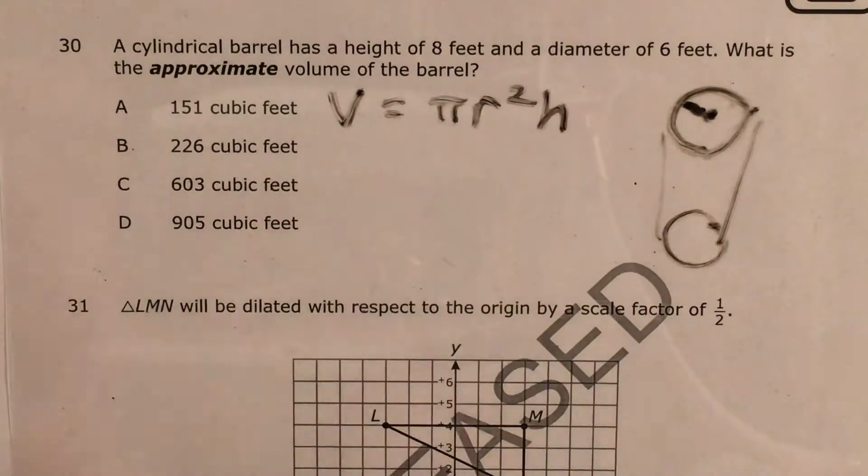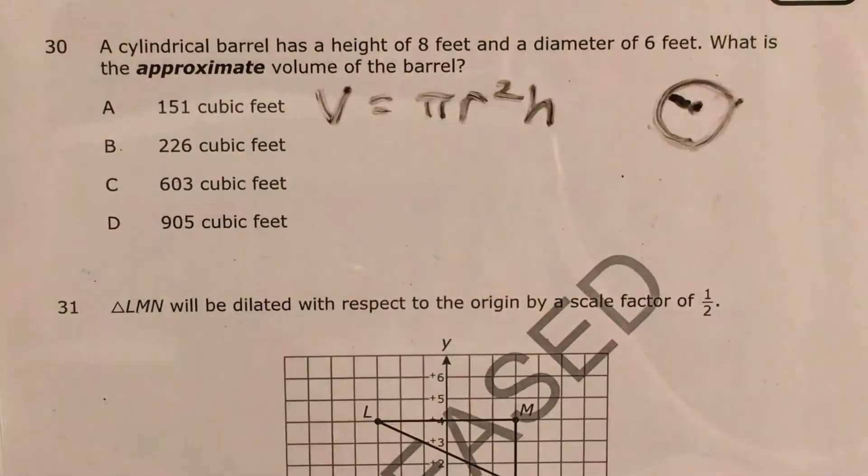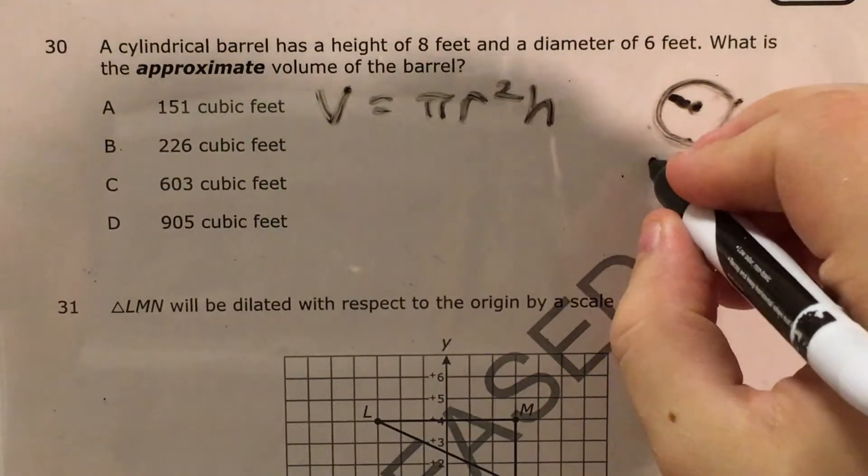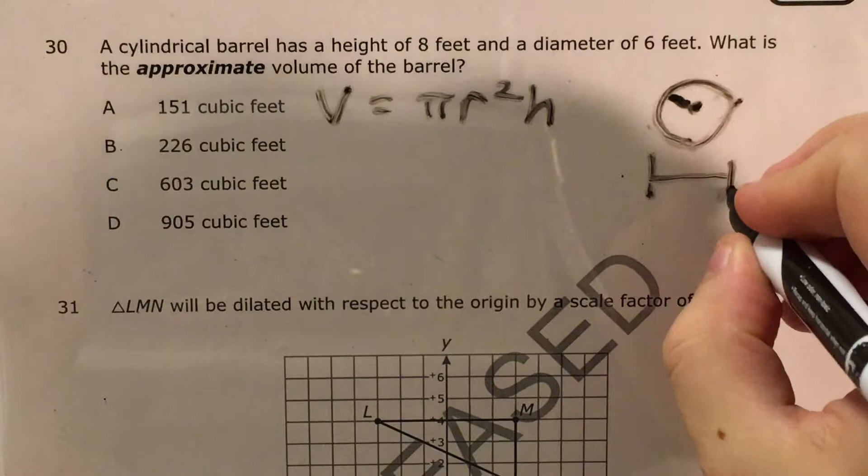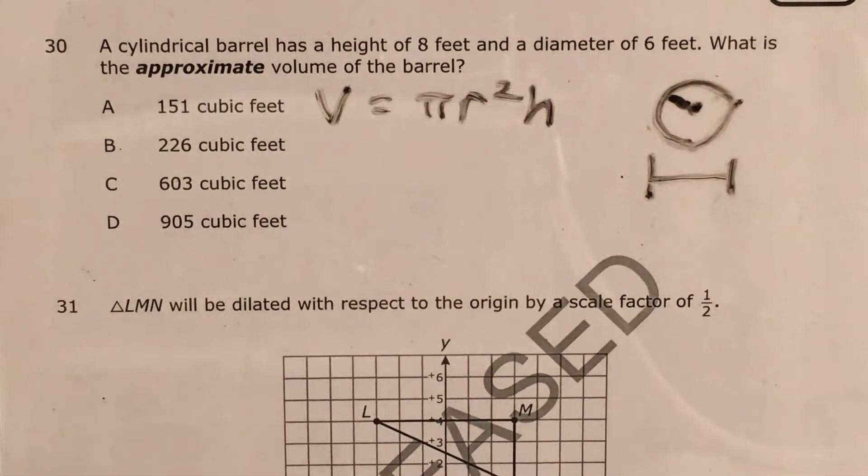Now the problem unfortunately doesn't give me my radius, it gives me my diameter, and I'm actually gonna have to go ahead and do a quick bit of math beforehand. I'm gonna have to remember that this is my diameter—the diameter is all the way across and the radius is half of the way across.